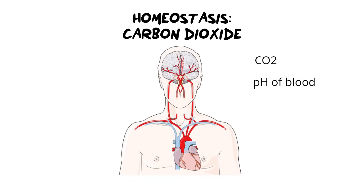Where exactly are we regulating carbon dioxide? It will surprise you — it's not in the lungs. We regulate carbon dioxide in blood vessels, in two very important blood vessels. The first blood vessel is the one in your neck, and there's one on either side. It is called the carotid artery, and this makes sense because this is the artery that is bringing fresh blood to your brain.